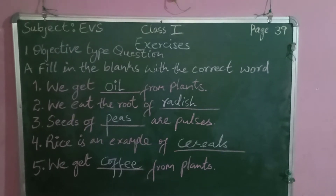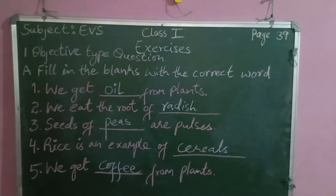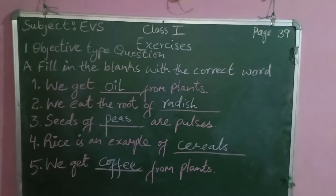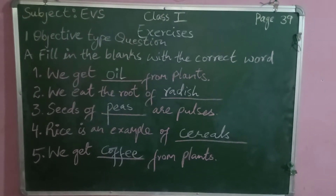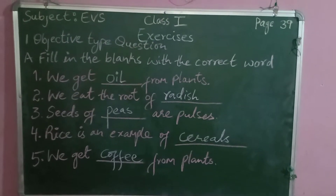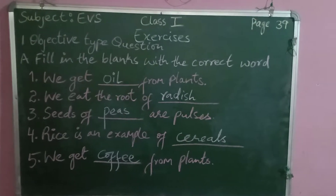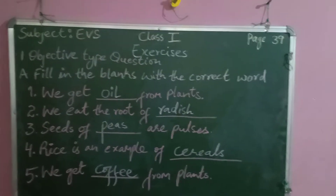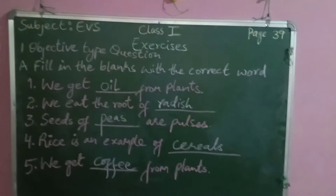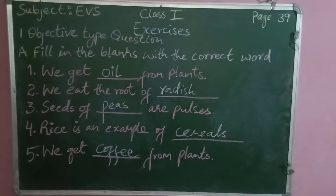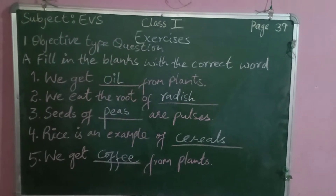Moving on to question number three: seeds of dash are pulses. The options are wheat and peas, so peas is the correct answer. Then, rice is an example of cereal, so for question four you have to write cereals.